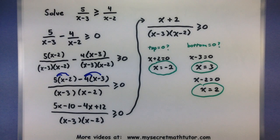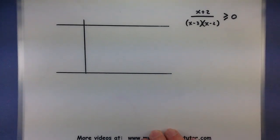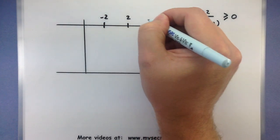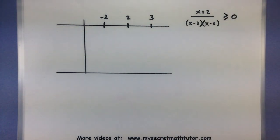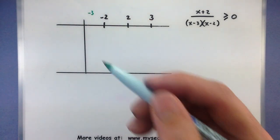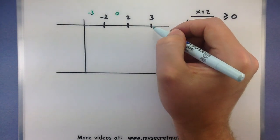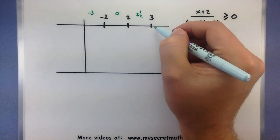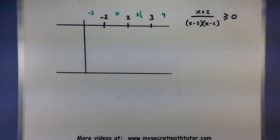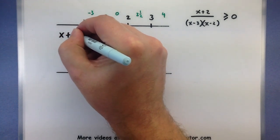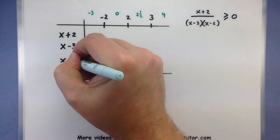Let's put these values into a table, written from smallest to largest: negative 2, 2, and 3. Test values: negative 3 for less than negative 2, 0 between negative 2 and 2, 2.5 between 2 and 3, and 4 for greater than 3. Each of these gets tested into the three parts of our rational: x plus 2, x minus 3, and x minus 2.